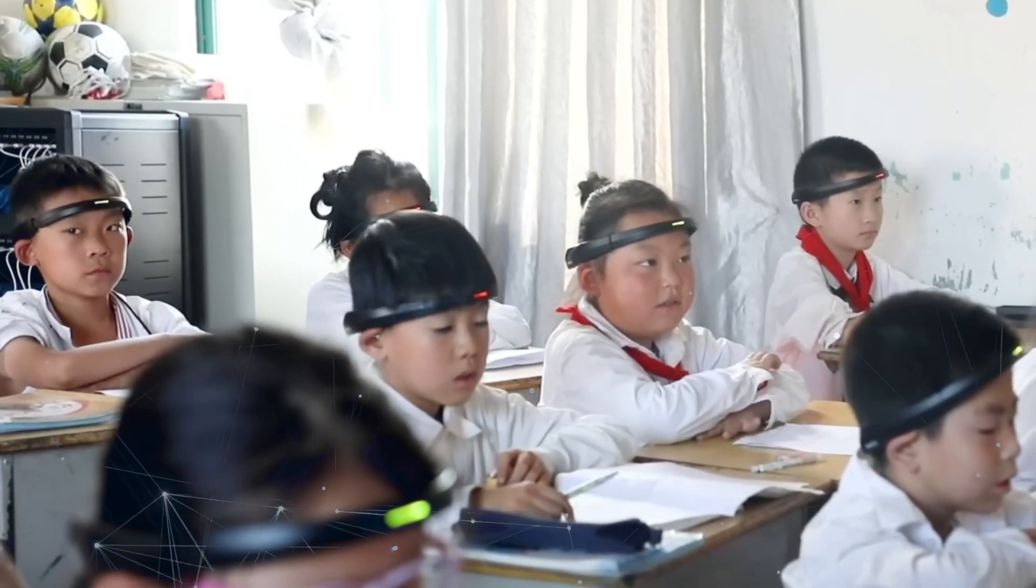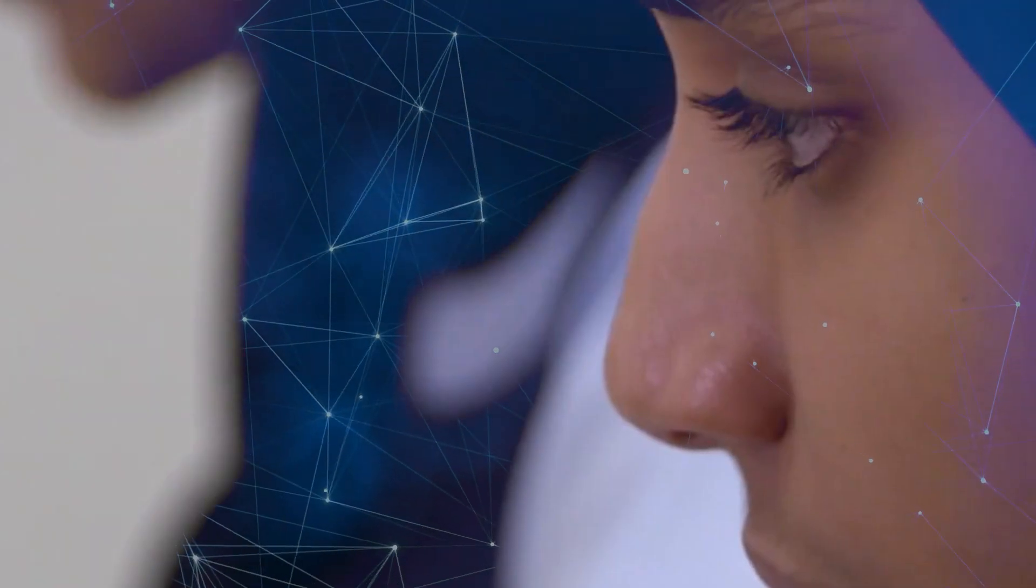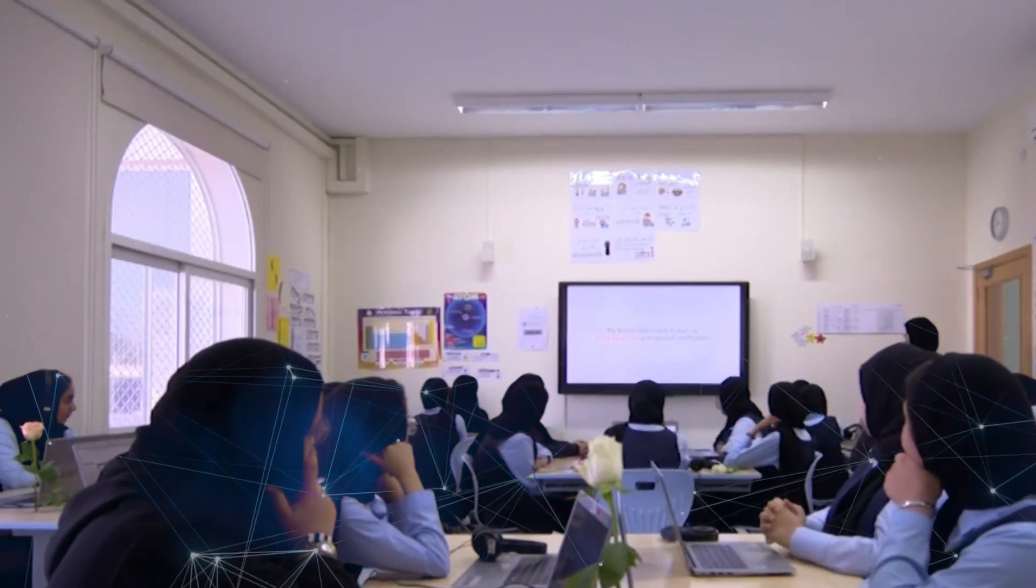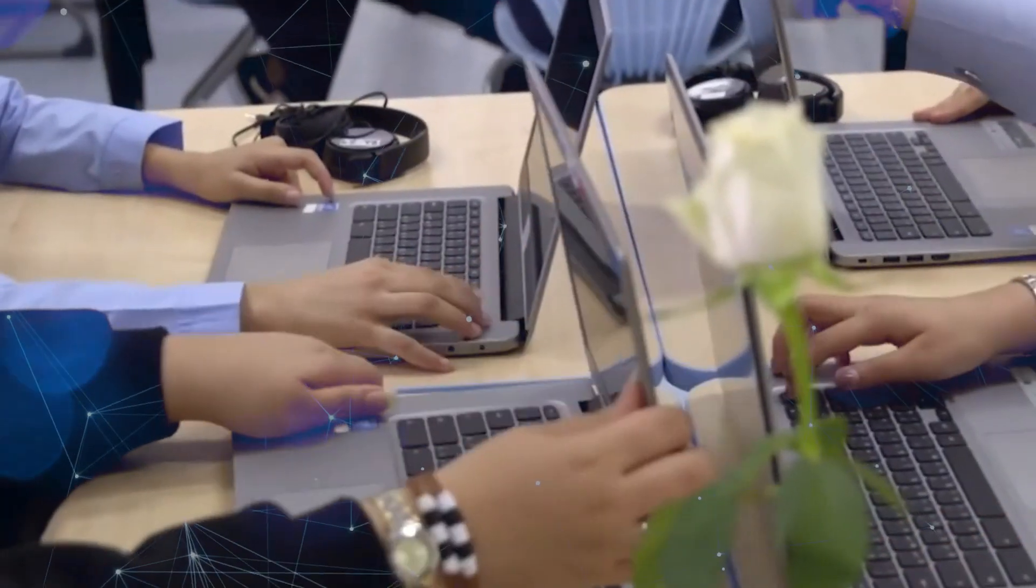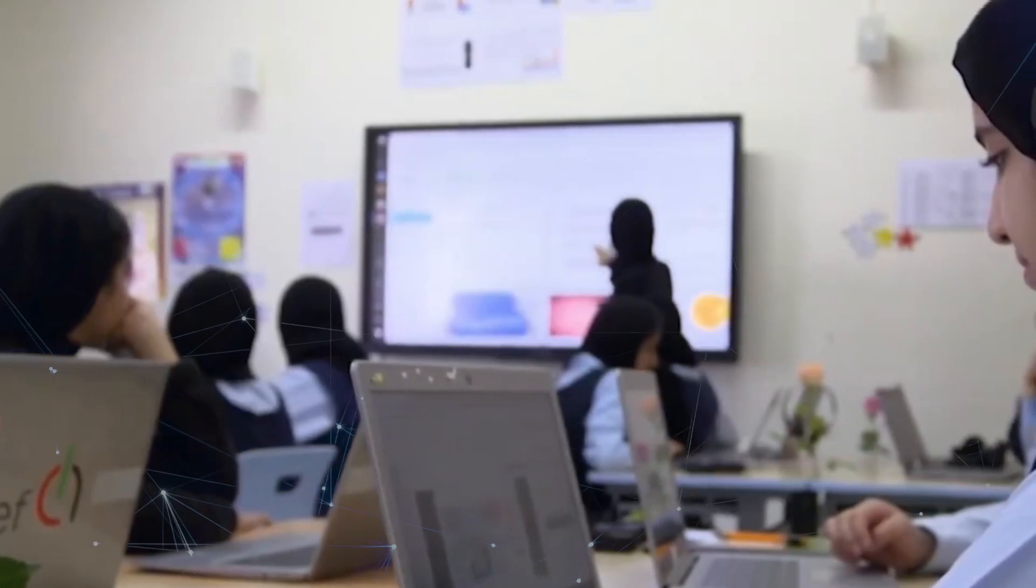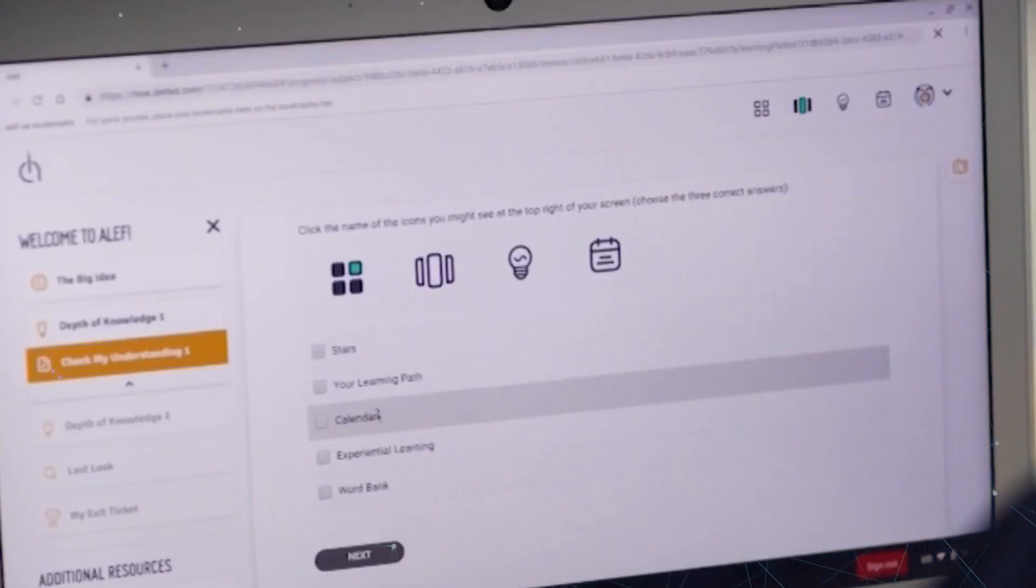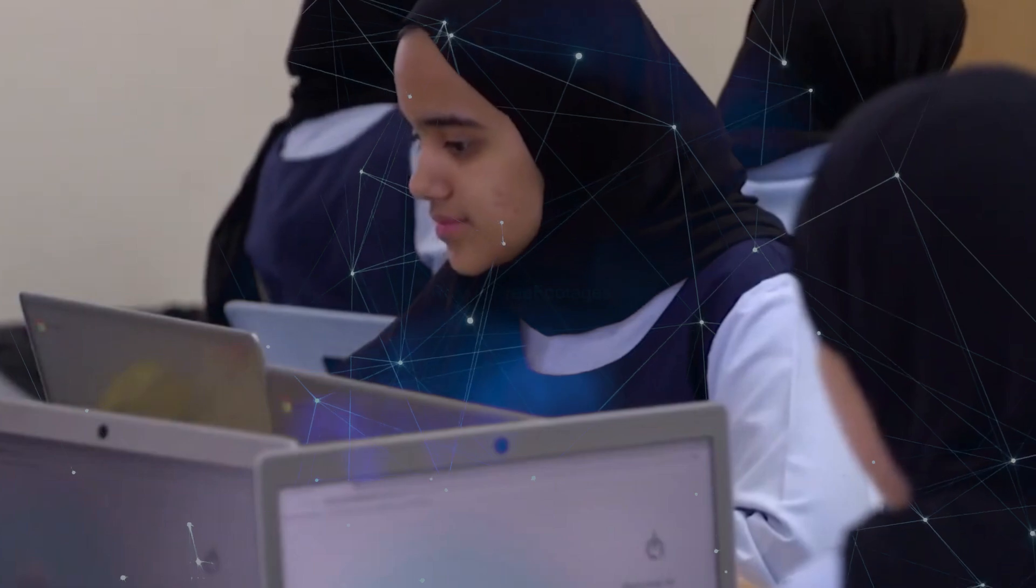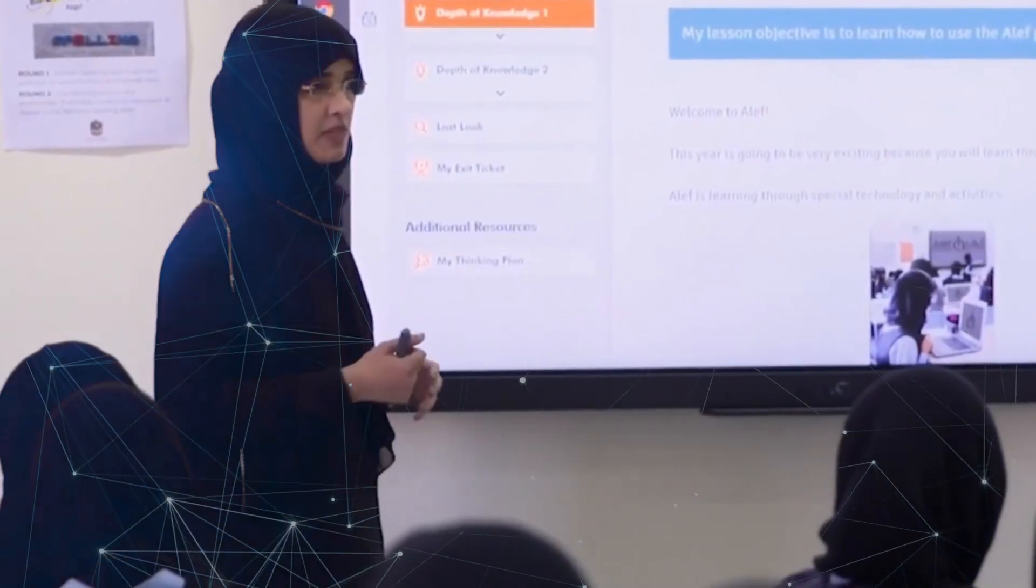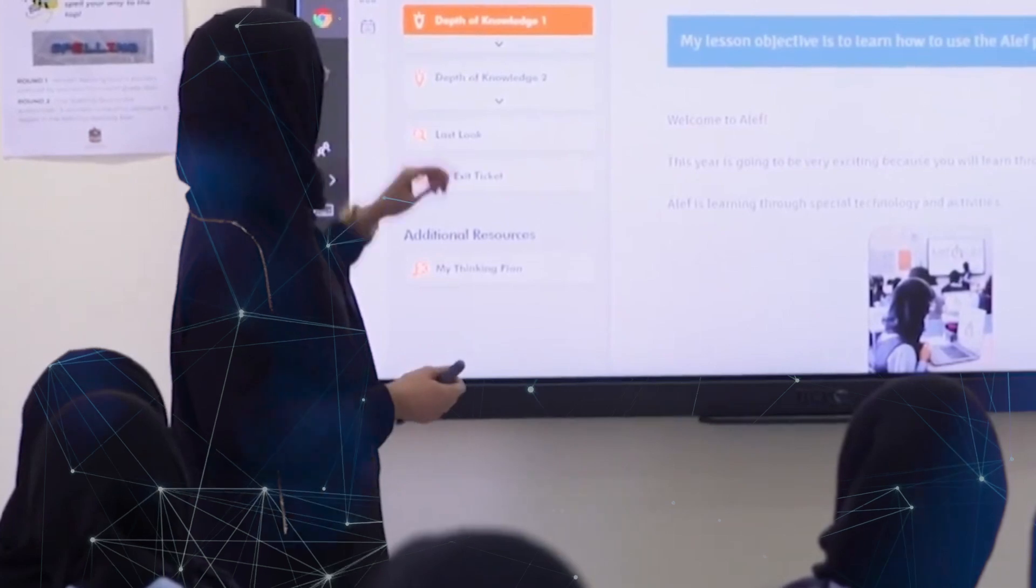Consider a school district implementing AI to track students' progress throughout their academic journey. The AI system can highlight which students are struggling in particular subjects, predict future academic performance, and suggest personalized interventions. This data-driven approach can help educators make informed decisions and provide targeted support where it's needed most.